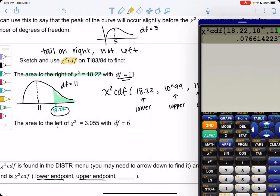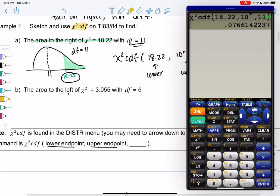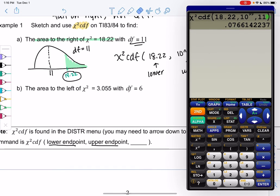So let's try one more, and then we'll do actual hypothesis tests in the next section. So we'll do area to the left of χ² = 3.055. So that's like a z-score, but instead it's chi-square, and degrees of freedom is 6.